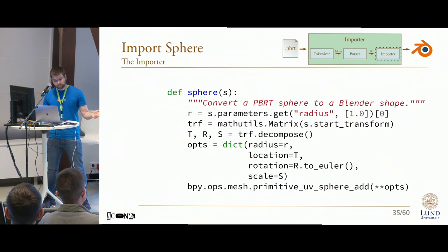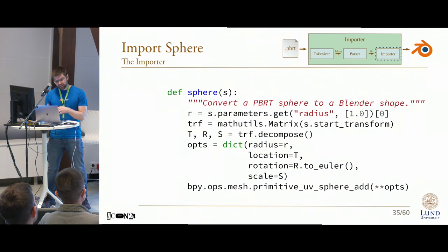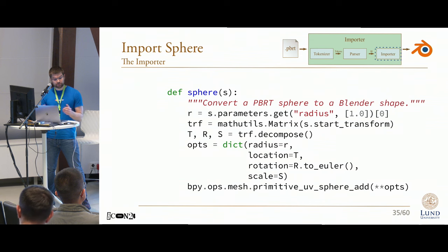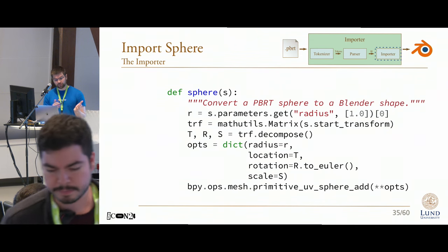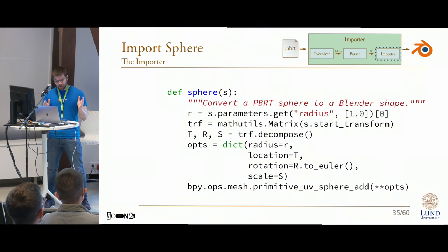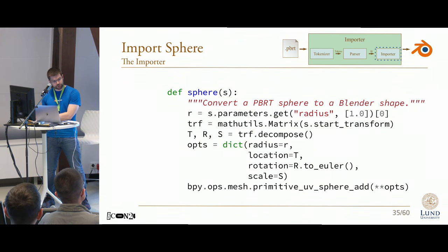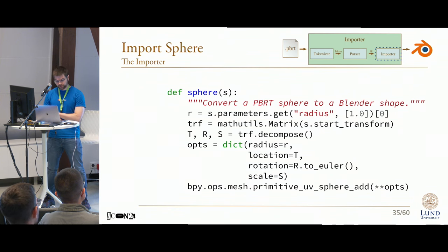For a PBRT sphere in particular, we can extract the parsed parameters from the intermediate representation and create a normal Blender object from this, such as a UV sphere in this case. However, the astute among you probably recognizes that this doesn't really import a sphere as much as it converts it into a mesh object, so that is something I want to address next.